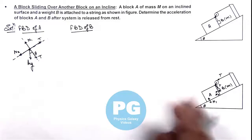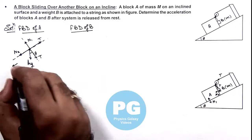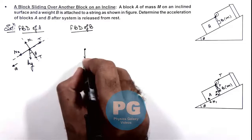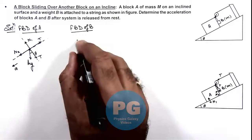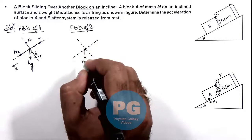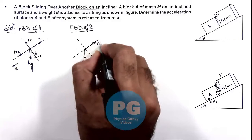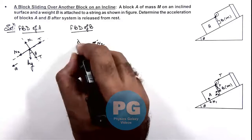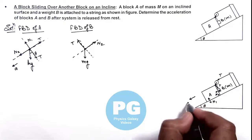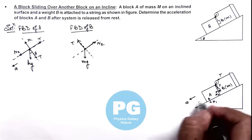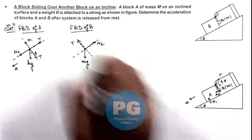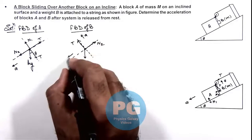Block A is sliding down with acceleration ay. For the free body diagram of block B, it experiences its weight small mg in the downward direction. Normal reaction N2 acts on it and tension acts in its direction. When block A slides down with acceleration ay, block B moves along with A and also has an acceleration ay in the upward direction, giving it two acceleration components.